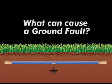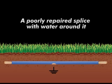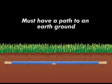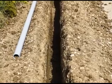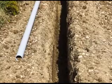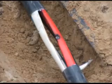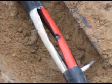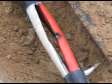What can cause a ground fault? A nick or cut in the insulation, or a poorly repaired splice with water around it. A current must have a path to an earth ground to be a detectable ground fault. In most cases, a cable contained in a conduit will not have a detectable fault to ground. One exception would be a PVC non-conductive conduit that is completely severed, exposing the conductors to the earth ground.